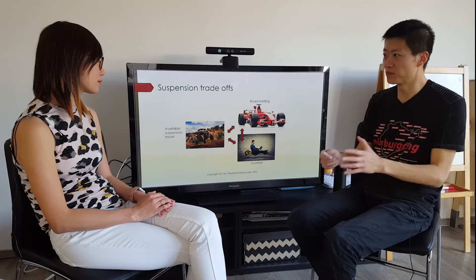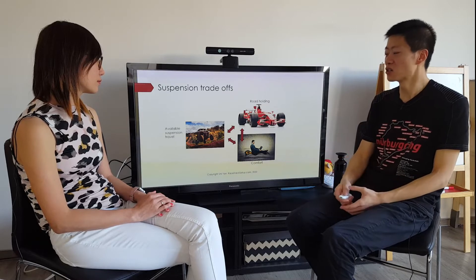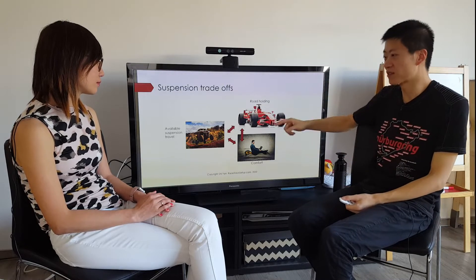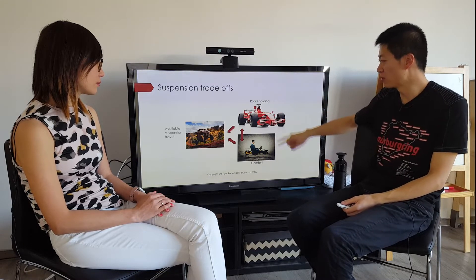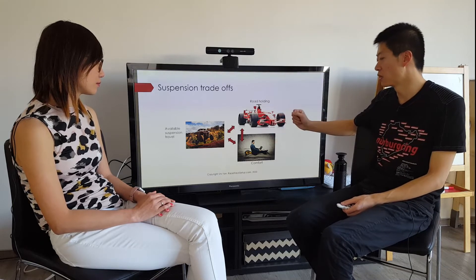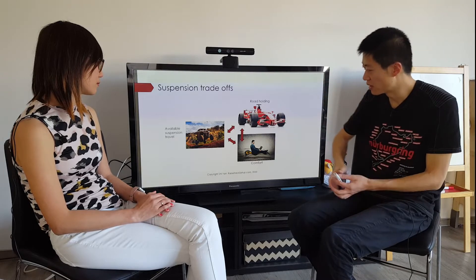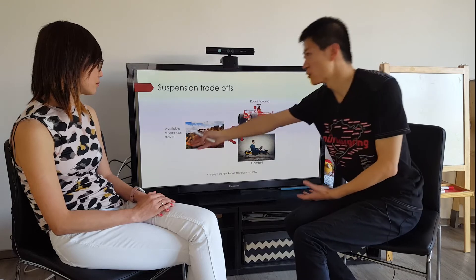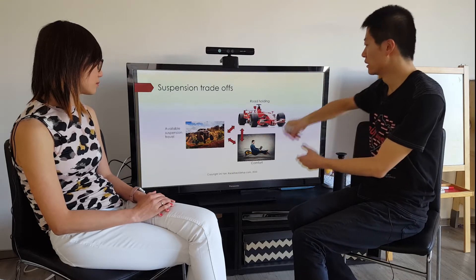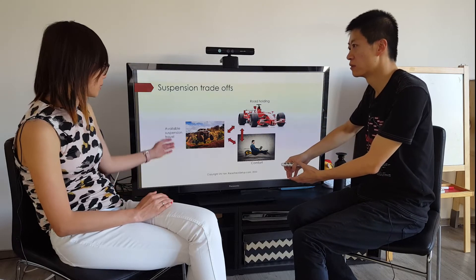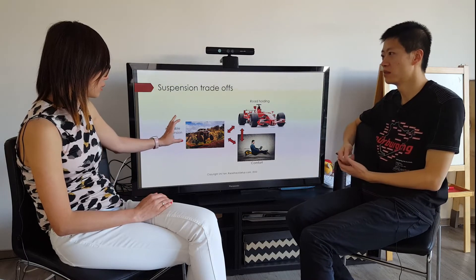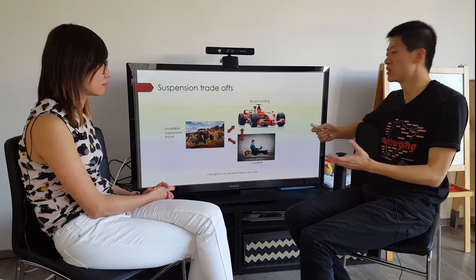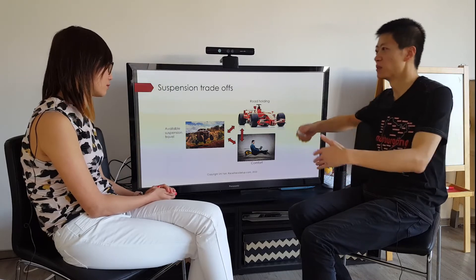There are some trade-offs in suspension that are worth talking about right away — this is quite fundamental. We'd like to have comfort, and we also want to have good road-holding, but these two are kind of in conflict with each other. The trade-off you can make between these two is determined by how much suspension travel you have. The more suspension travel you have available, the better you can make this road-holding versus comfort trade-off. So imagine if you didn't have any suspension — the trade-off between road-holding and comfort would be really bad because you'd just be bouncing along on the tires.